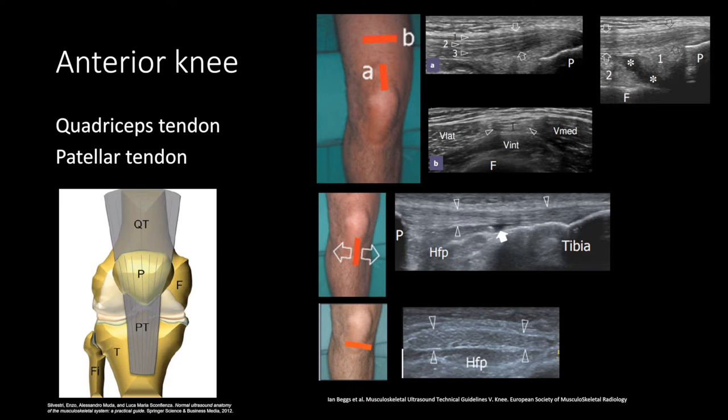The empty arrowheads show the patellar tendon from the patella to the tibial tuberosity. The arrow is the deep infrapatellar bursa, and it is normal to have some mild distension of the bursa here. Hoffa's fat pad is labeled as HFP.